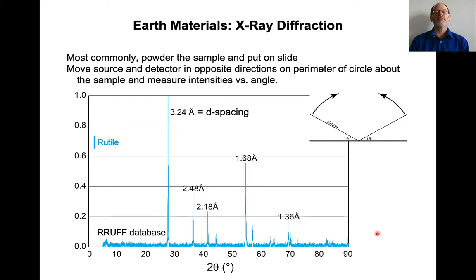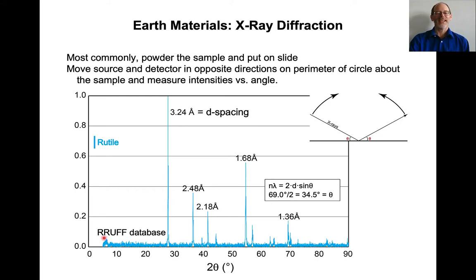Here's an example. A lot of times people use powder x-ray diffractometry. You just powder the sample, stick it on a slide, move the source and detector in opposite directions continuously, and measure the intensity. Here's the x-ray diffraction pattern for rutile, taken from the RRUFF database. You can see different 2-theta angles — around 28 degrees corresponds to 3.24 angstroms, 37 degrees to 2.48, 70 degrees to 1.36, and so on. If you want to solve Bragg's law for this, you take the 2-theta angle of 69 degrees, divide by 2 to get 34.5 degrees, and knowing the wavelength is copper K-alpha at 1.54 angstroms, you can calculate the d-spacing of 1.36 angstroms.